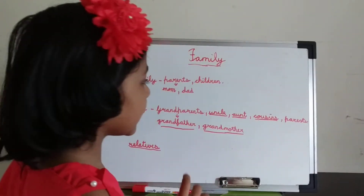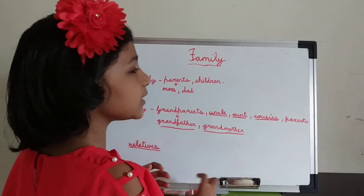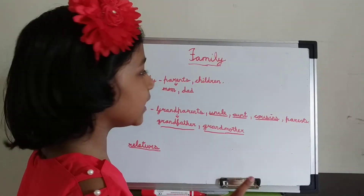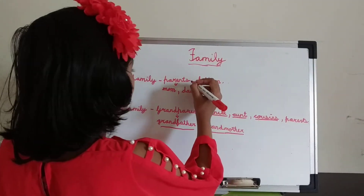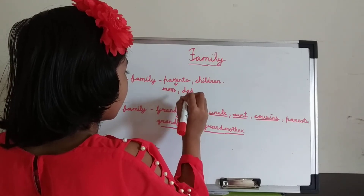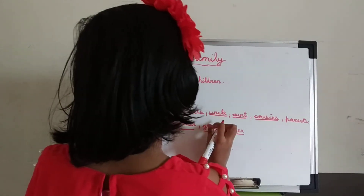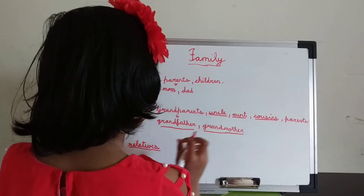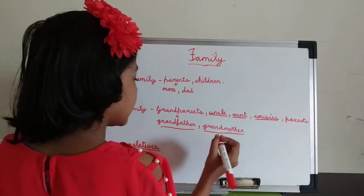Family is done. One question is left — what is a family? Family is members; if there are members in a family, then it will be a family. Like mom, mother, father, and children make a nuclear family. And grandparents, uncles, aunt, cousins, parents, grandpa, grandma — yes, like that.